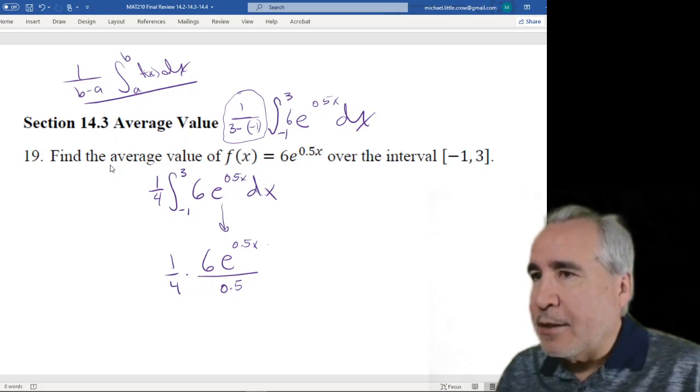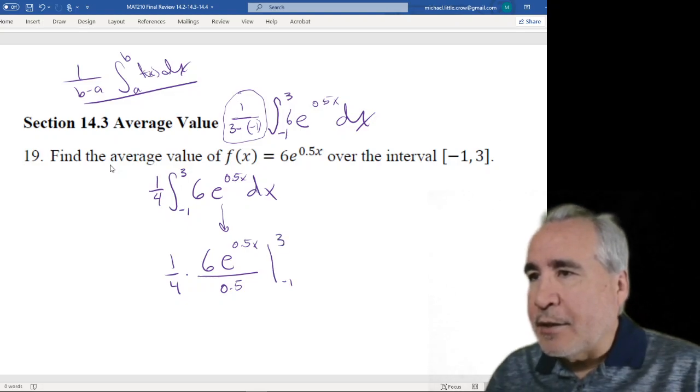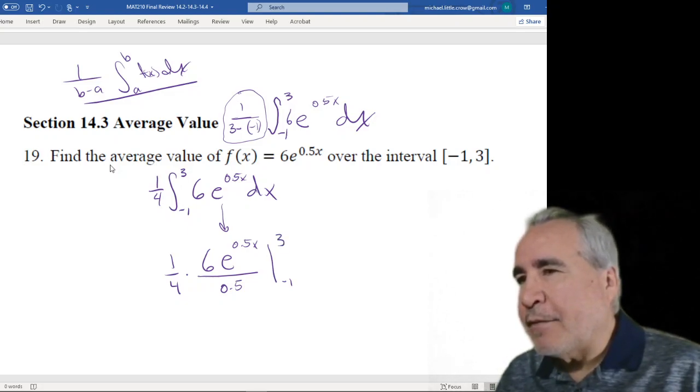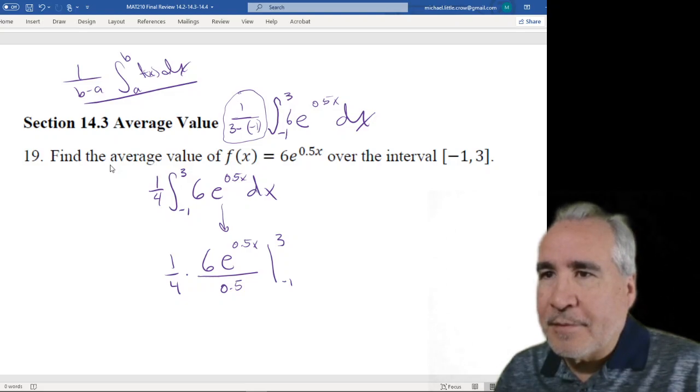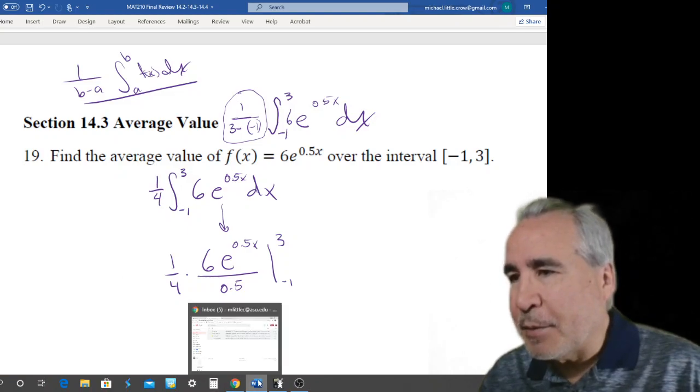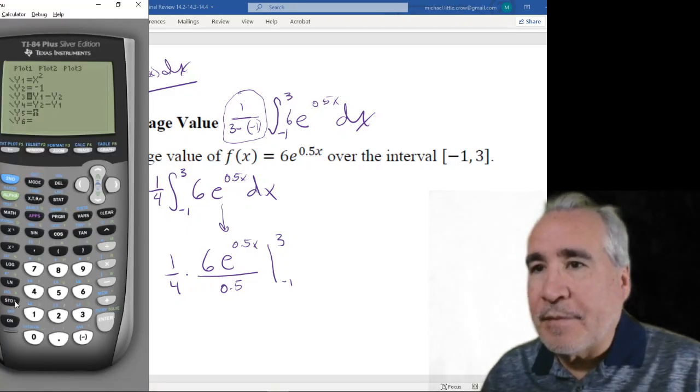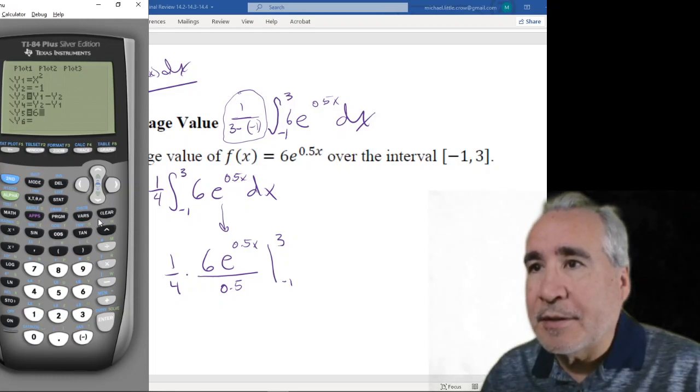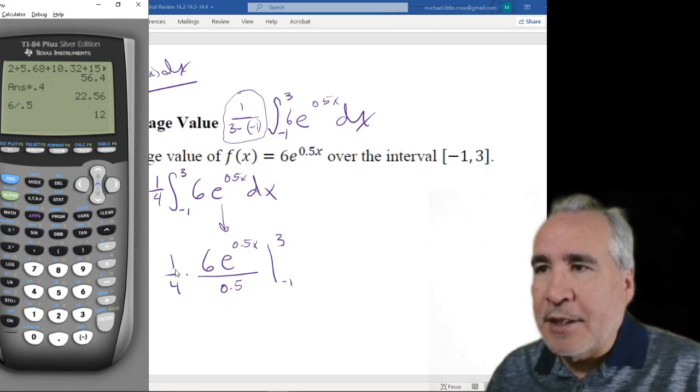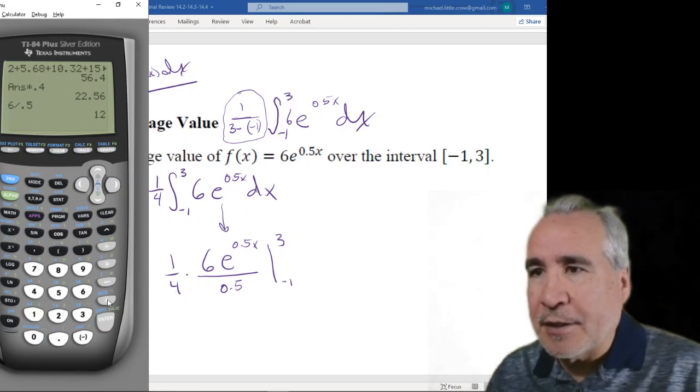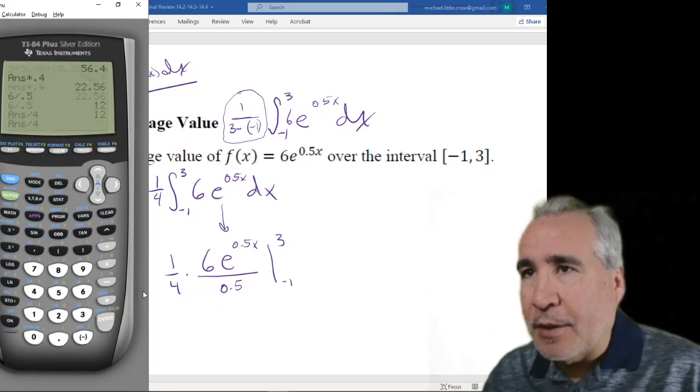So we take our limits from negative 1 to 3. You take 6 divided by 0.5, 6 divided by half, you flip the half, so that's actually 12, 12 over 4. So, yeah, I don't know, maybe I should show you. So 6 divided by 0.5, it's going to be 12, right? So that's up here, we got 12 divided by 4, would give us the 3.